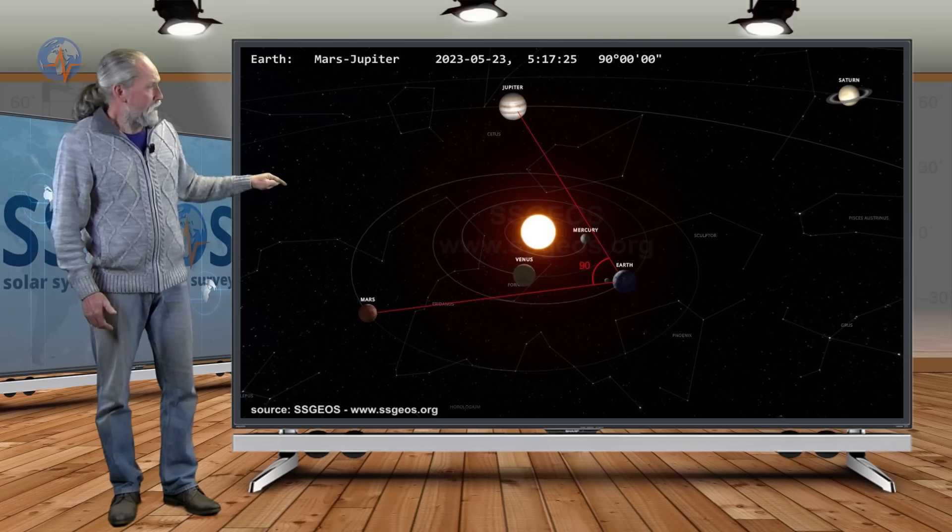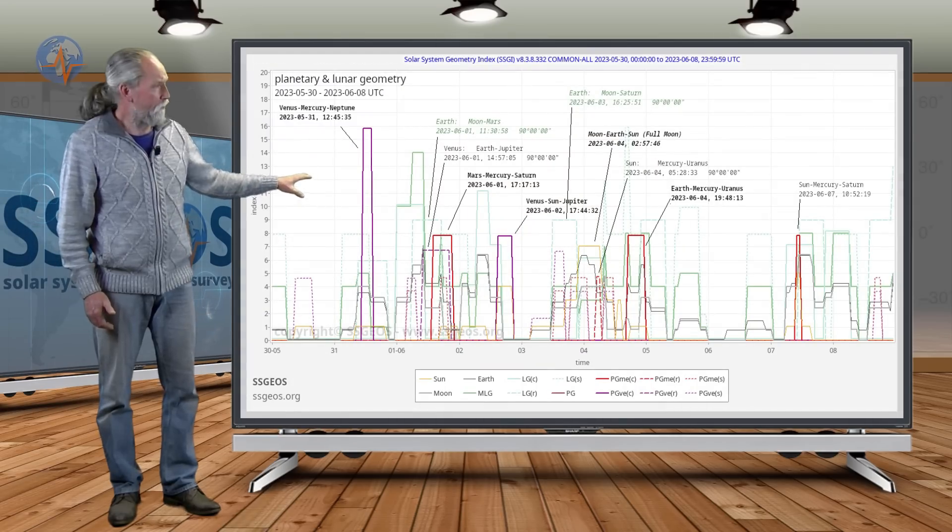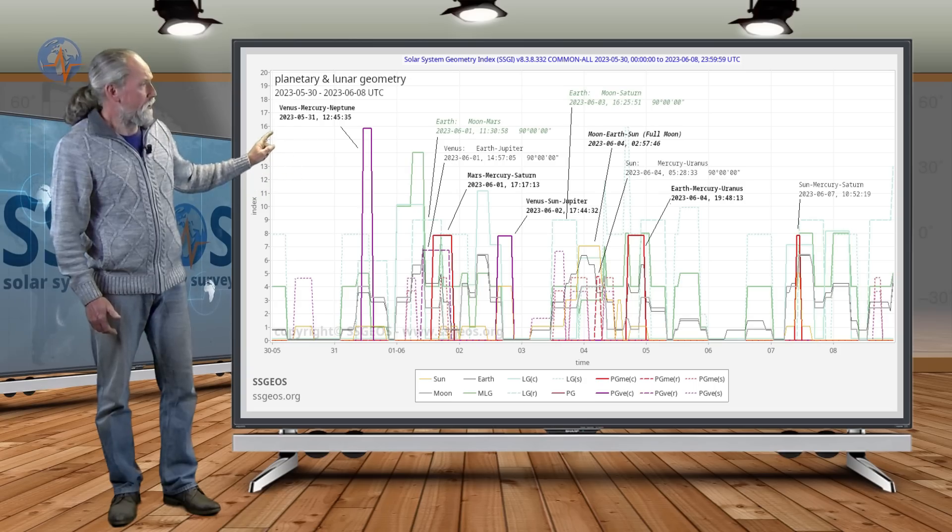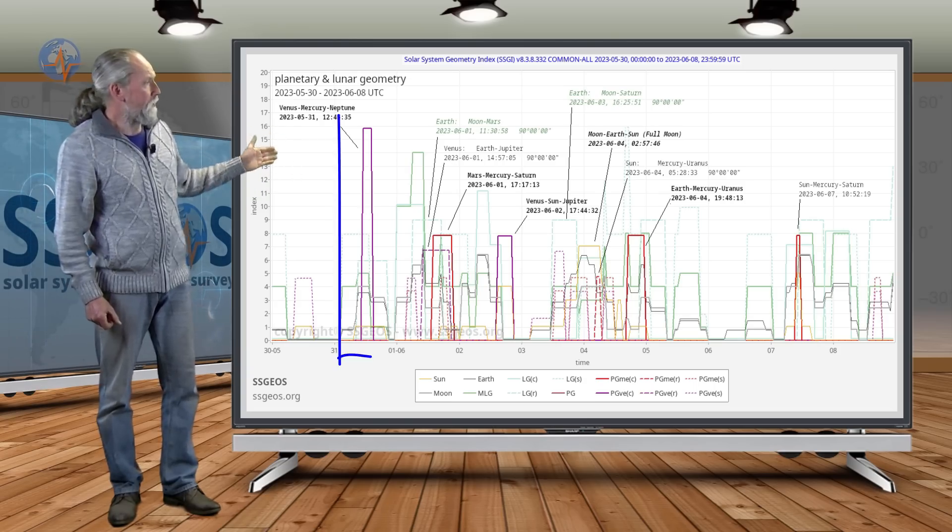So that is what happened. Let's go to what is going to happen. If we look at the SGI graph for the coming week, we see very critical planetary geometry coming up tomorrow already with Venus, Mercury, and Neptune—a critical conjunction.